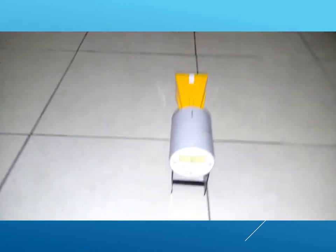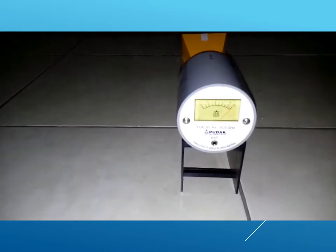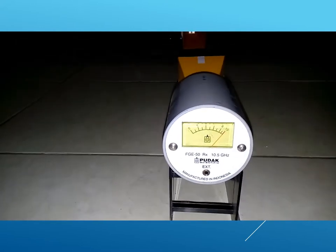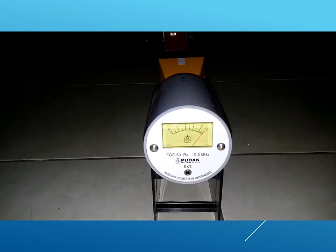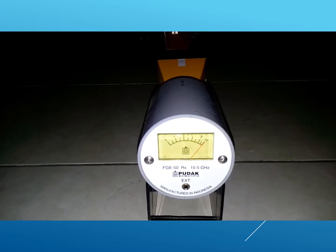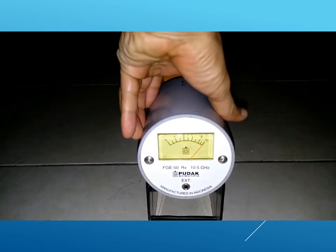First we set up the transmitter and receiver for vertical microwave axis as indicated by white marks on them. The distance is adjusted to get full scale in the receiver.